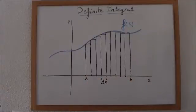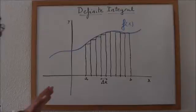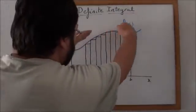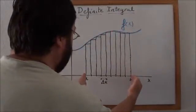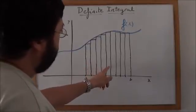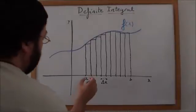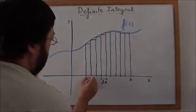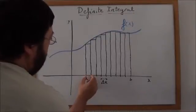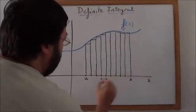We can approximate the area we are looking for, the area under the curve between points a and b, by the sum of the area of these rectangles. These rectangles with a constant width, increment of x for all of them.